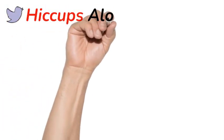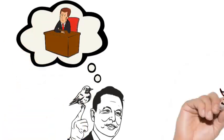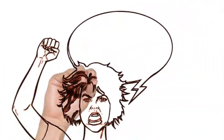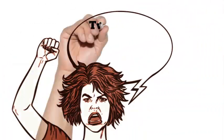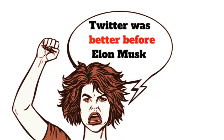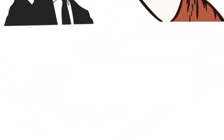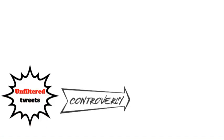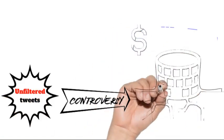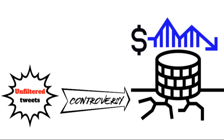Hiccups along the way. Musk's entry into Twitter wasn't without hiccups. Resistance from some quarters, public scrutiny, and unforeseen circumstances added a layer of complexity to the transformation. Musk's bold and unfiltered communication style often resulted in controversies and market fluctuations, which presented a challenge for the platform's stability and reputation.